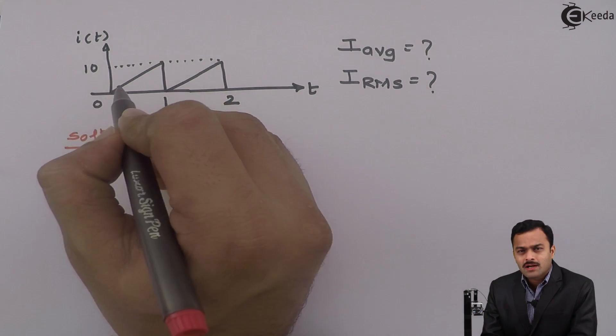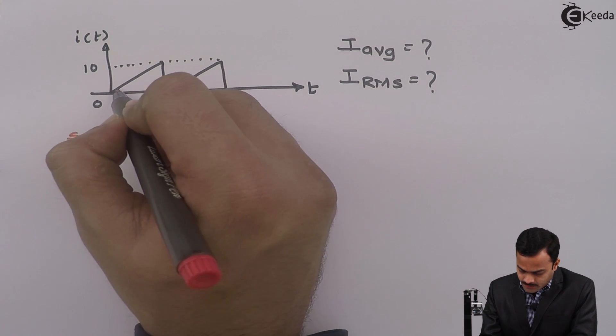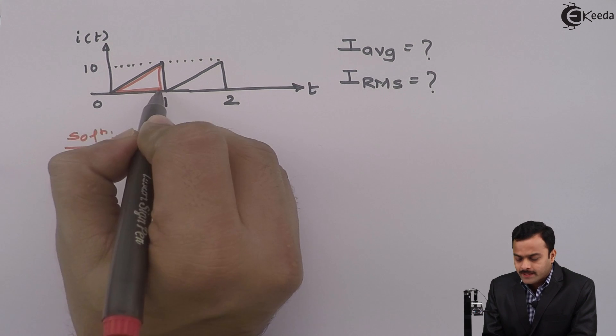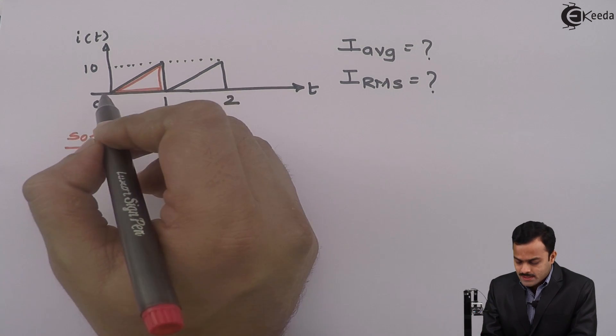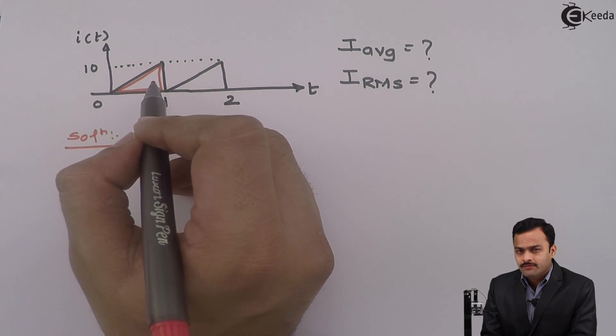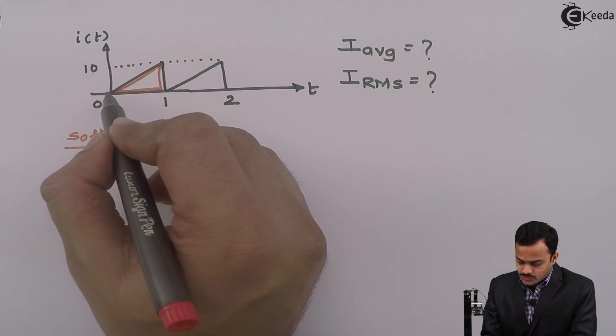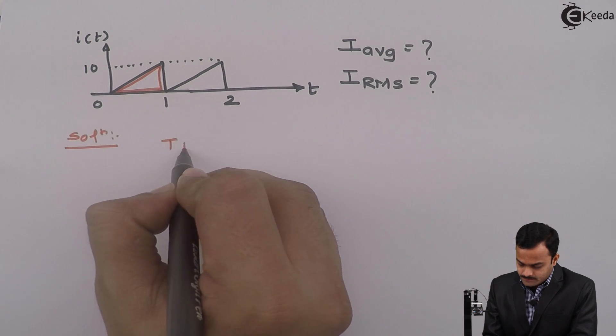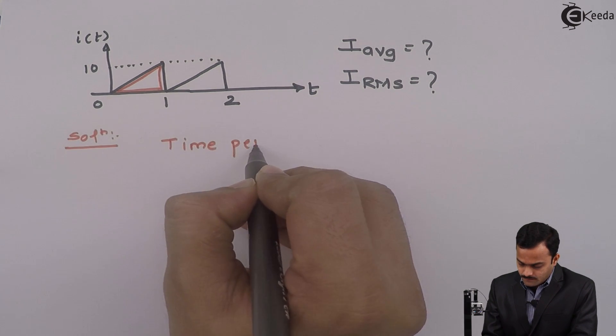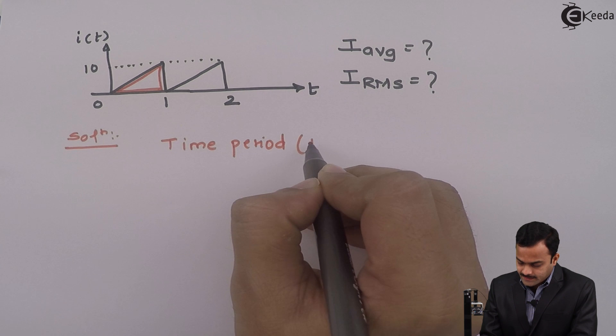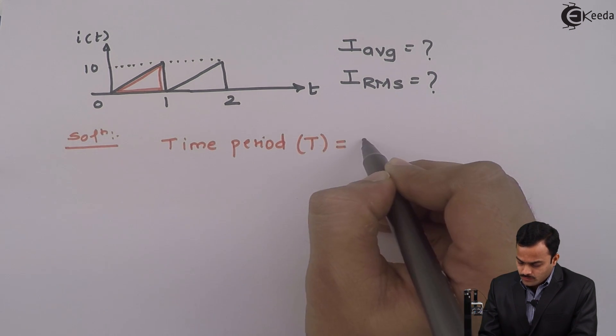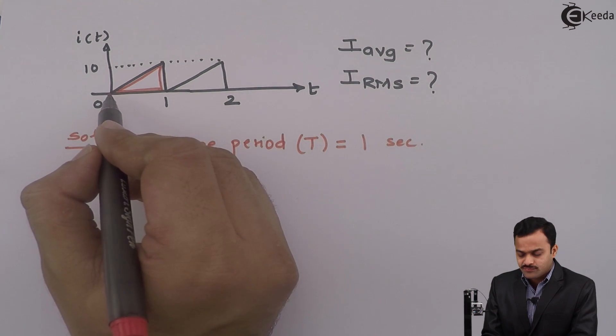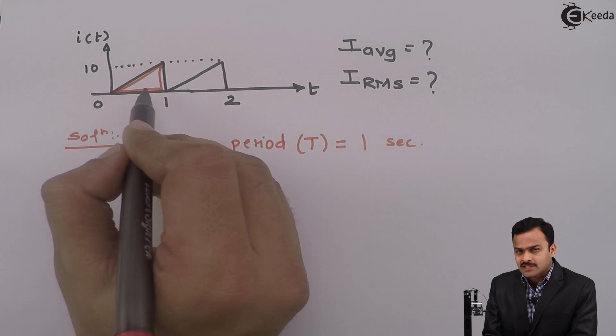This particular waveform having this cycle which will repeat itself. Once we decided a cycle, we can get a time period of that waveform. The cycle exists from 0 to 1, so time period is T = 1 second because cycle exists for this much of time.